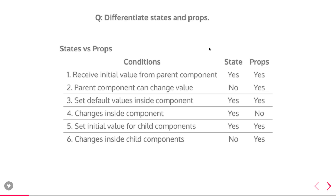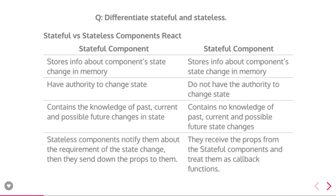A parent component cannot change the value of state, but props can be changed by the parent. Both can set a default value inside a component using getDefaultProps or getInitialState. Both can set initial values for child components. Inside a child component, state cannot be changed as it is immutable, but props can be changed.